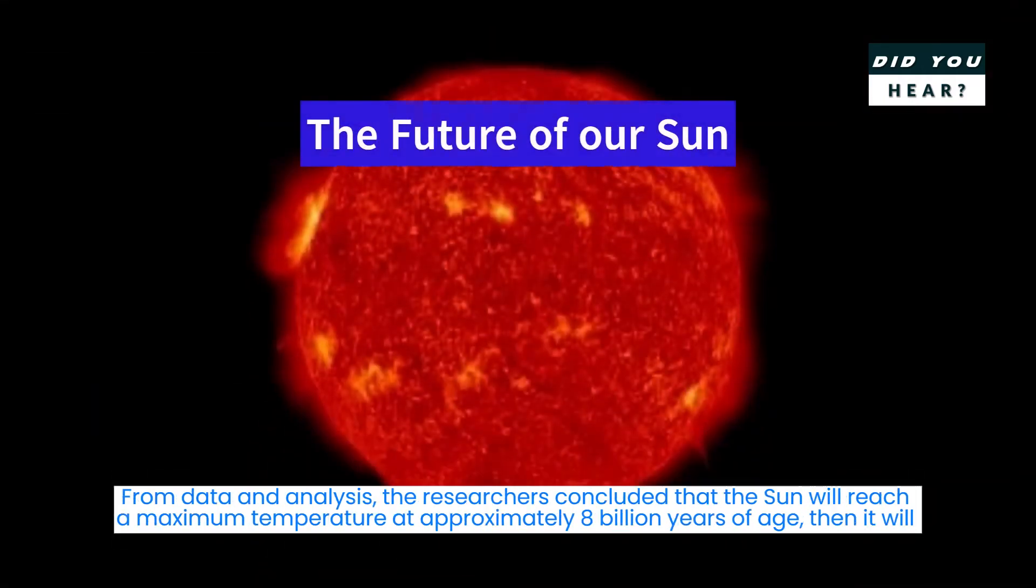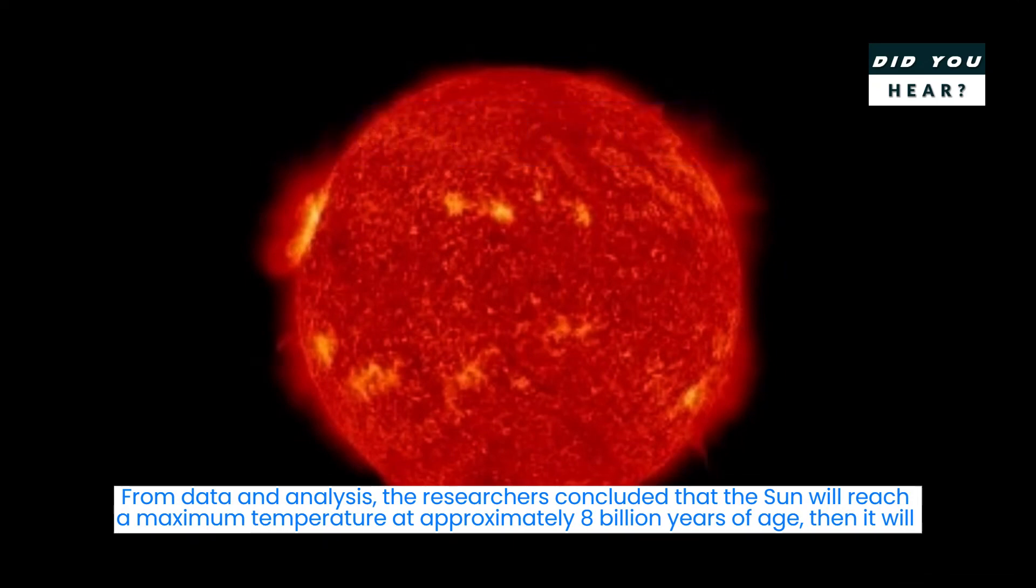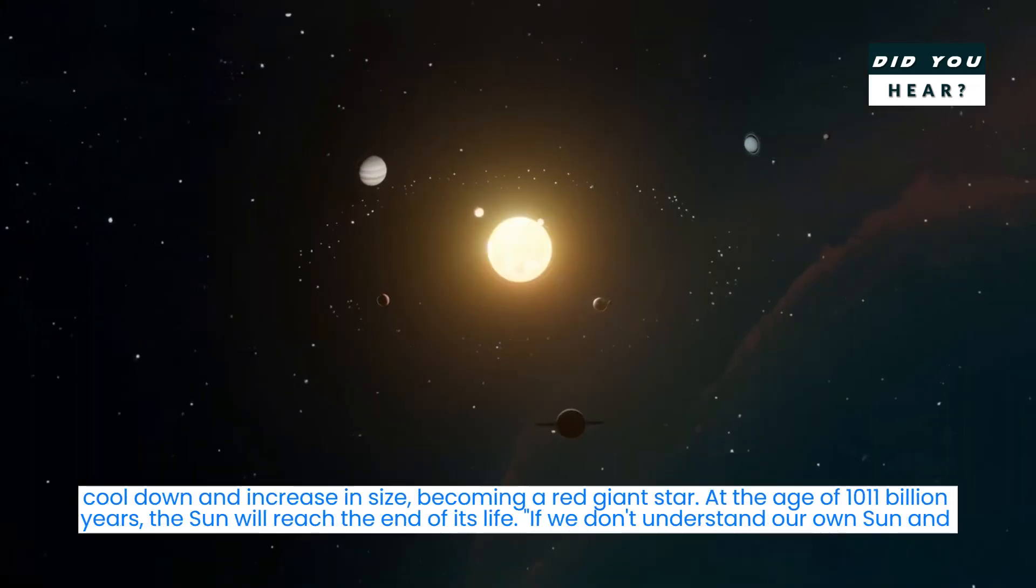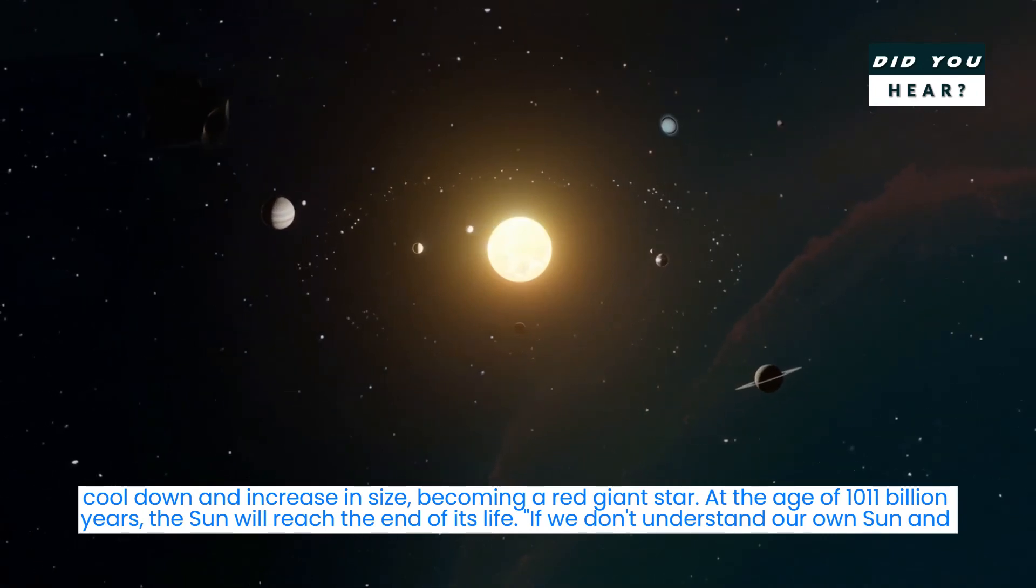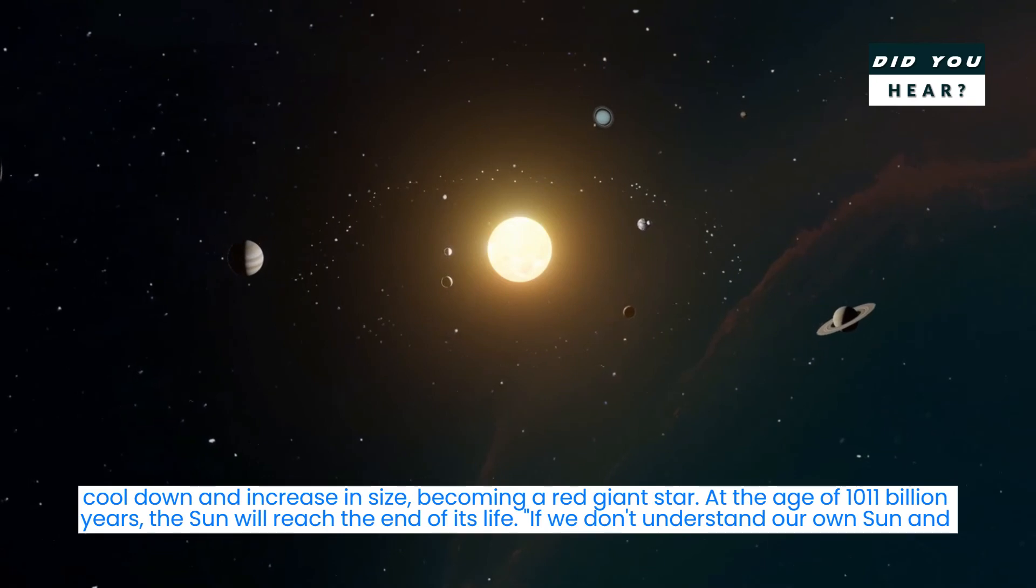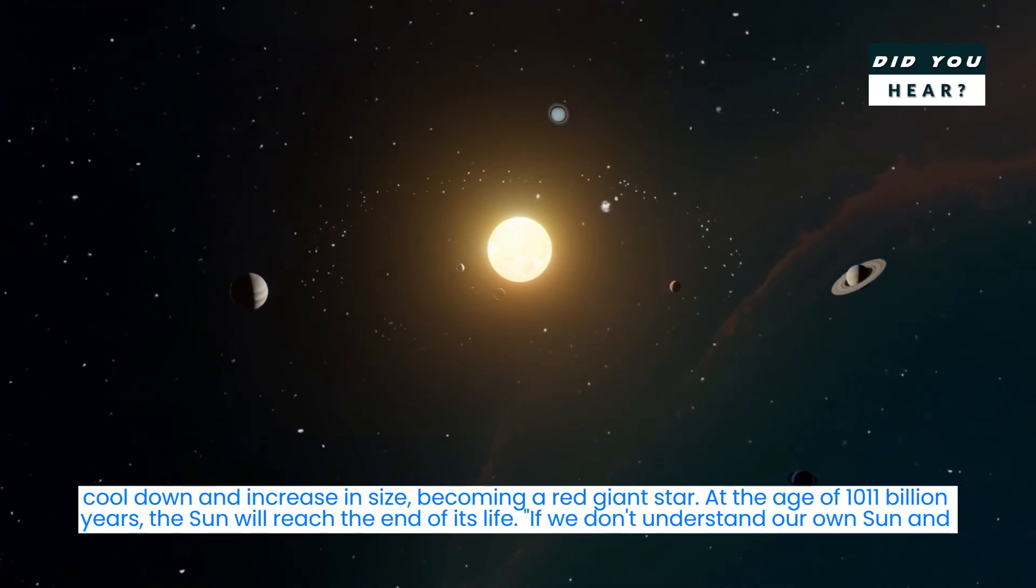From data and analysis, the researchers concluded that the sun will reach a maximum temperature at approximately 8 billion years of age, then it will cool down and increase in size, becoming a red giant star. At the age of 10-11 billion years, the sun will reach the end of its life.